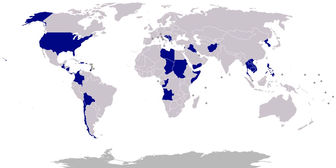1840, Fiji Islands: in July, naval forces landed to punish natives for attacking American exploring and surveying parties. 1841, McKean Island, Drummond Island, Taputanea, Gilbert Islands, Kingsmill Group, Pacific Ocean: a naval party landed to avenge the murder of a seaman by the natives. 1841, Samoa: on February 24, a naval party landed and burned towns after the murder of an American seaman on Upolu.